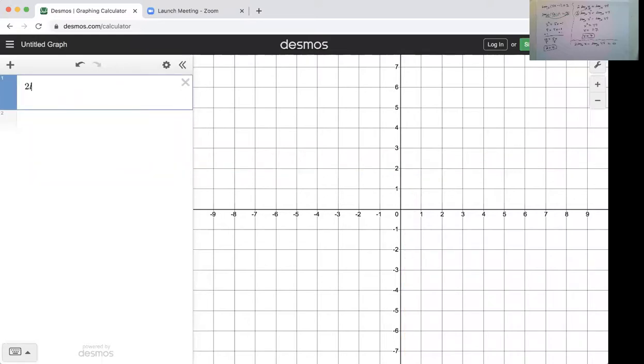So let's jump to Desmos and see what we get there. 2 times log base 6 of x minus log base 6 of 49. Let's call it y equals. When does that equal 0? It sure looks like it's 7, and that reinforces what we did on paper.